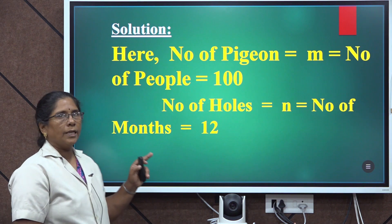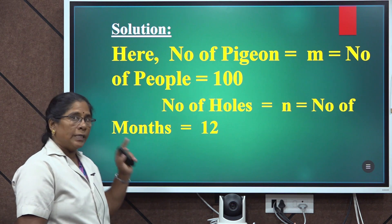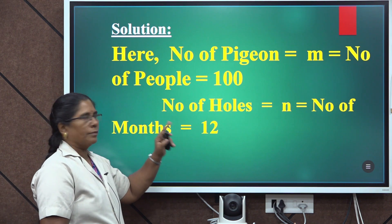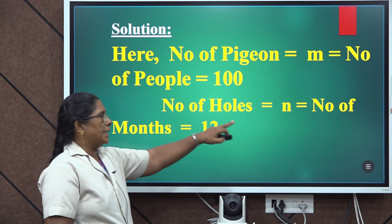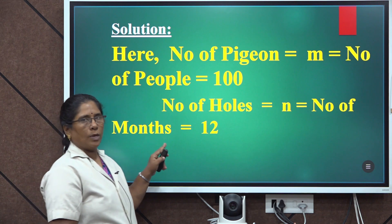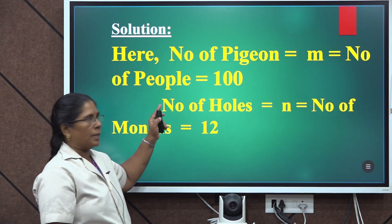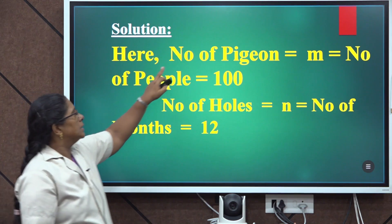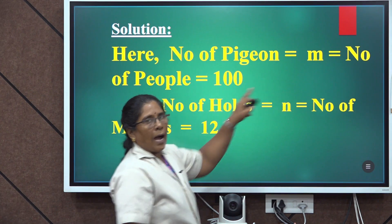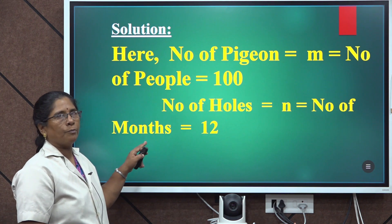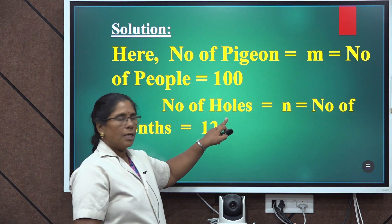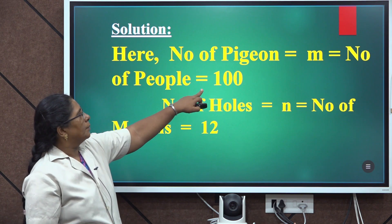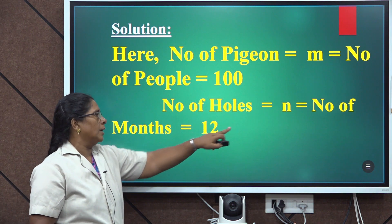The larger data given is the number of people, and the smaller data — though not explicitly stated — is understood to be 12 months. So the bigger data, number of people, is considered as number of pigeons, denoted M, which equals 100. The smaller data, number of months, is considered as number of holes, denoted N, which equals 12.